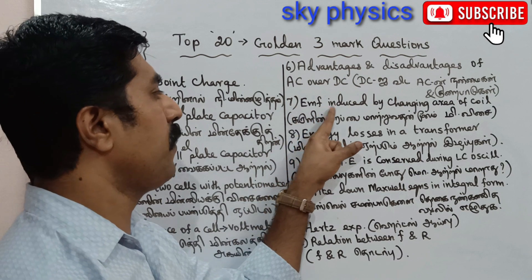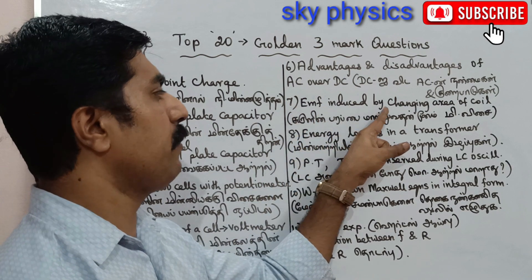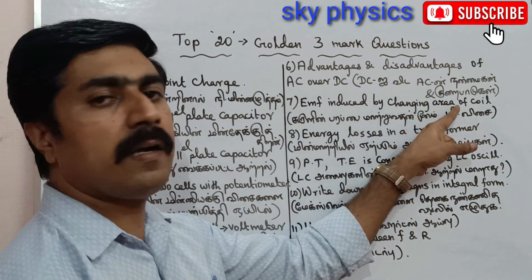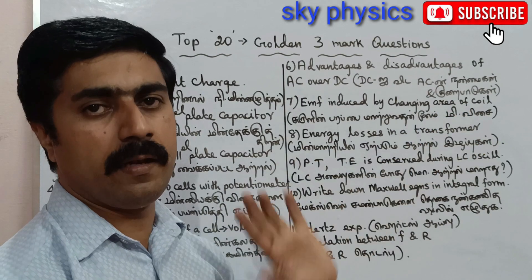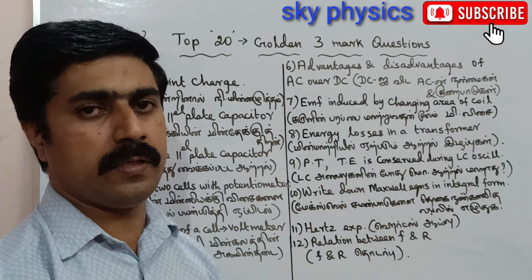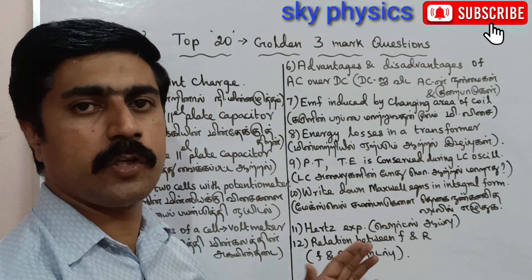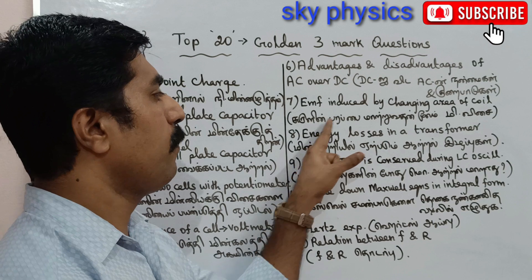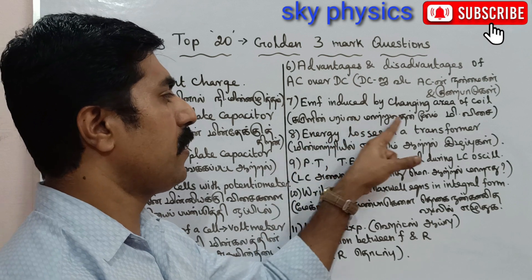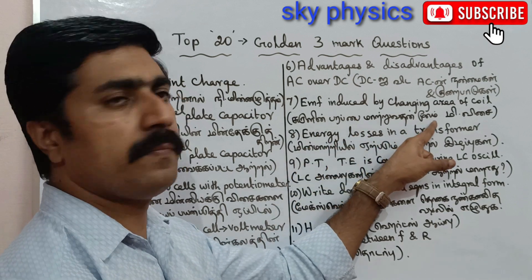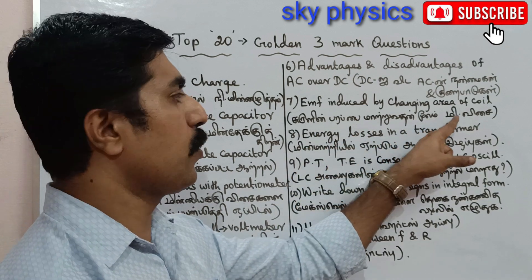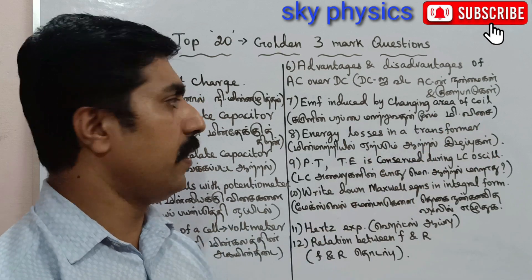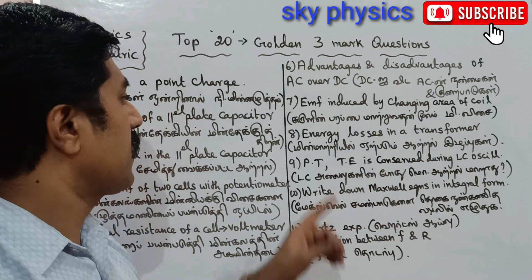7th question: EMF induced by changing the area enclosed by the coil. (Tamil: Oandthu Surulilin Parappai Matruodan Moolam Surulilin Ennadayi Minni Ekki Visaik Thunndapppadudthal.)